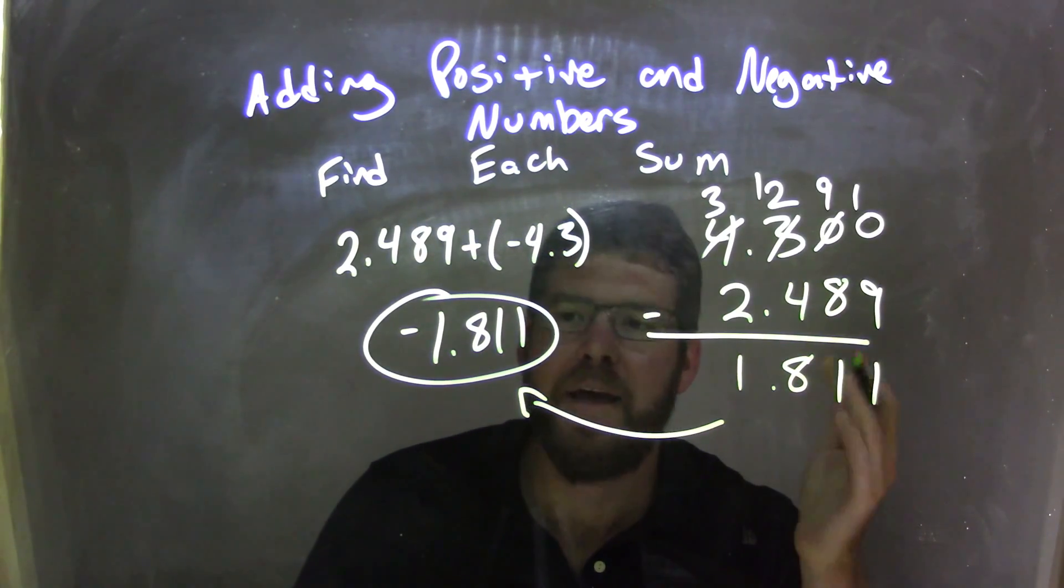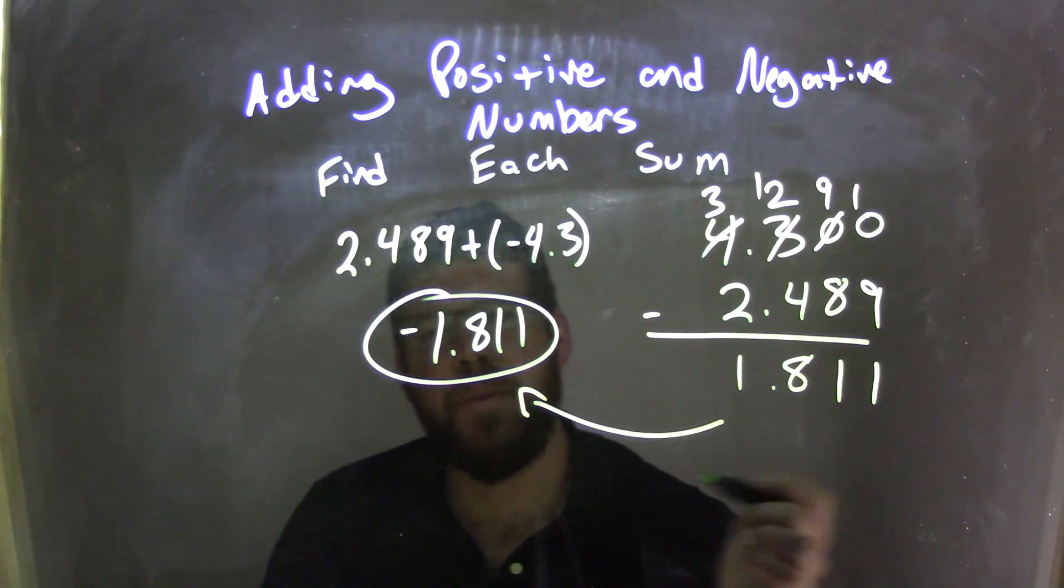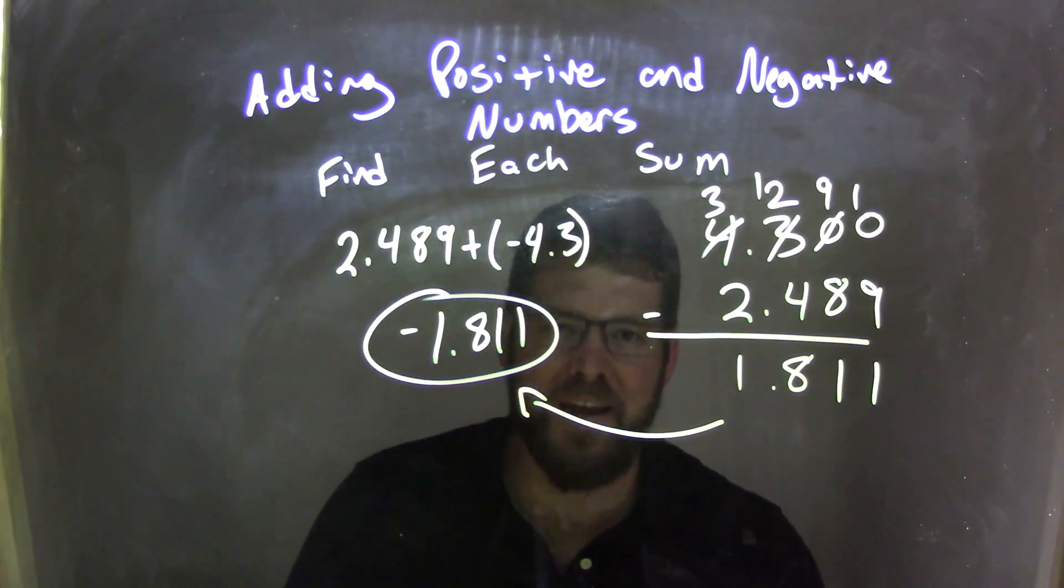I have 1.811 as my final answer. But I need to make that negative, and my final, final answer is negative 1.811.